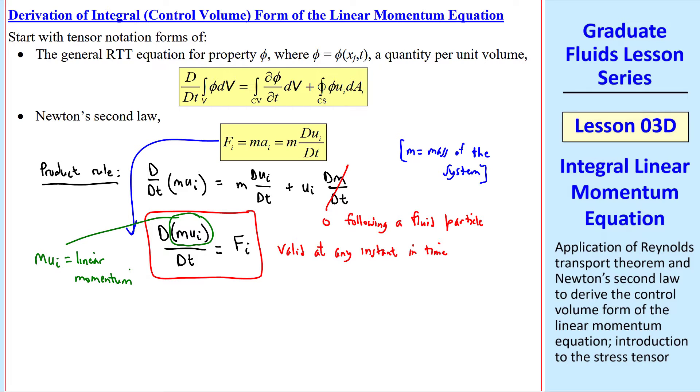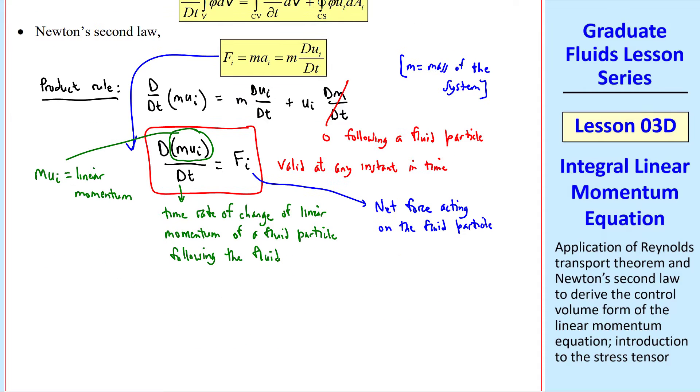Recall from high school physics that mass times velocity is linear momentum. So this left-hand side represents the time rate of change of linear momentum of a fluid particle following the fluid, which is our definition of material derivative. The right side of the equation is the net force acting on the fluid particle. We call this equation the linear momentum relation.